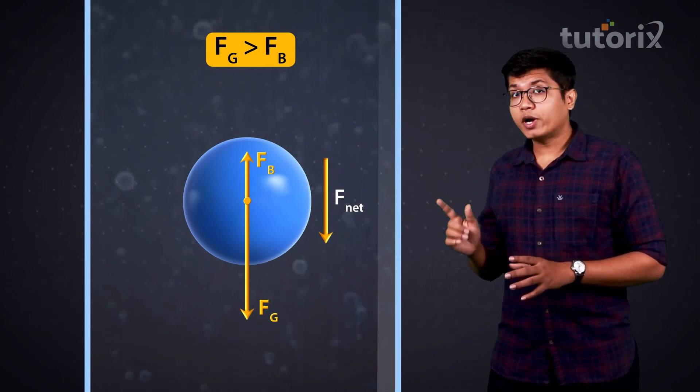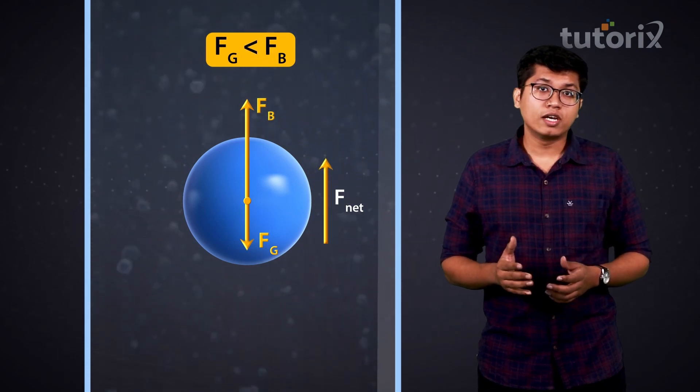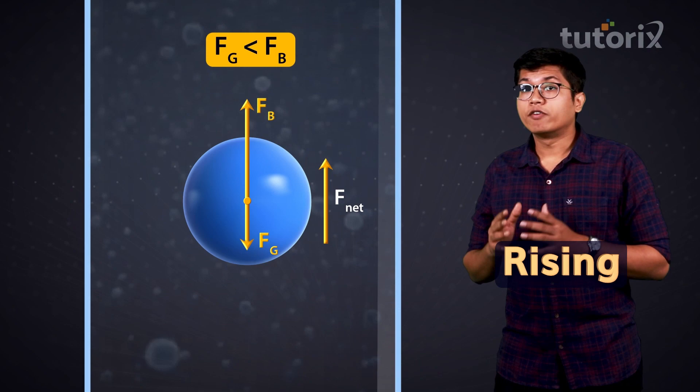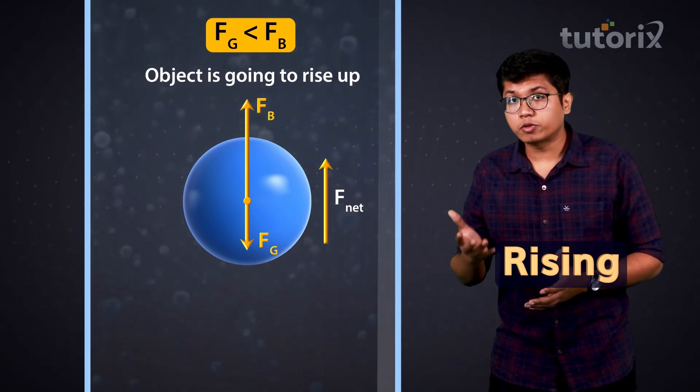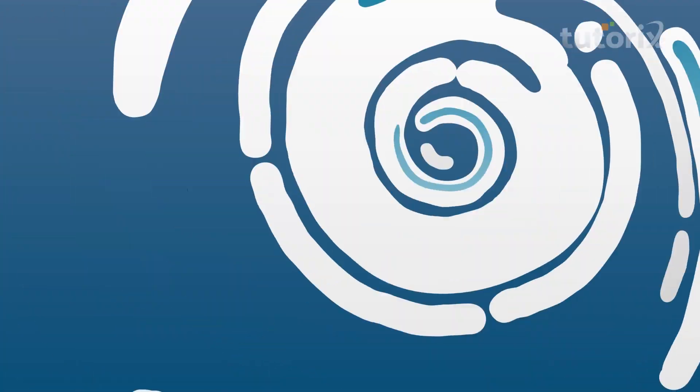However, if the buoyant force is stronger than the gravitational force, then the net resultant force is going to be upwards, which means the object is going to rise up. This is exactly what was happening in the helium balloon example. Now just knowing the balance of the gravitational and the buoyant force is not enough — we need a proper relation that allows us to predict beforehand if an object is going to float or sink.